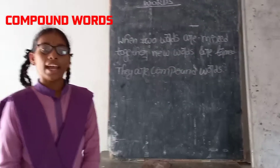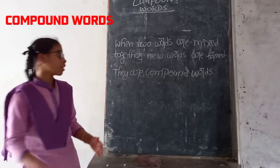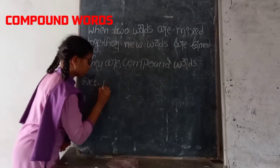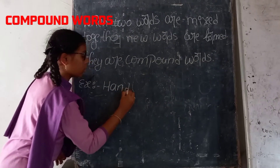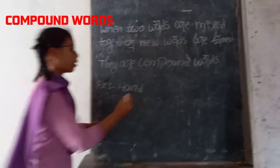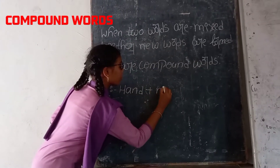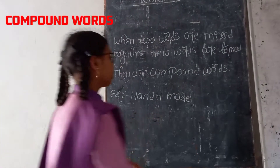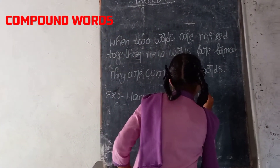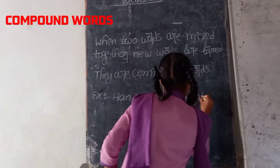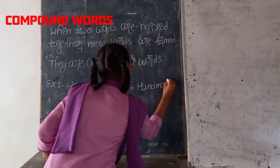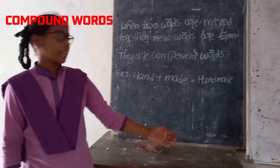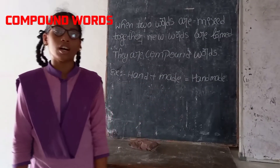For example, hand plus net is equal to hand net. Hand is one word, plus net is another word. They are mixed together, then a new word is formed. That is hand net. It is called a compound word.